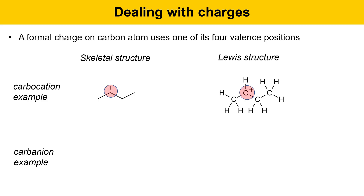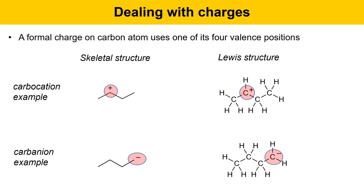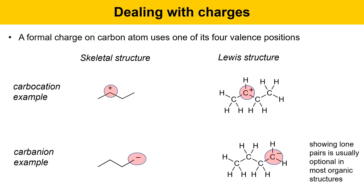Next, we'll look at a carbanion example. This molecule is a four-carbon species with a negative charge at the end of the chain. The carbon indicated is bonded to one other carbon, using one of its valence positions, and the negative charge uses another. That leaves two valence positions that must be occupied by hydrogen, so we draw two hydrogens attached to the right-hand carbon. Showing lone pairs is usually optional in most organic structures, but technically a Lewis structure would show all bonds and all lone pairs. We know the carbon on the right must have a lone pair because it has a negative charge — the only way to get the right number of electrons to make it negative is to give it a lone pair.